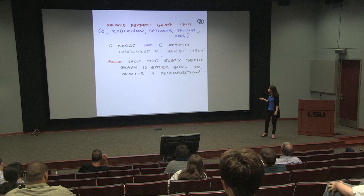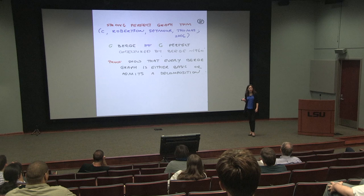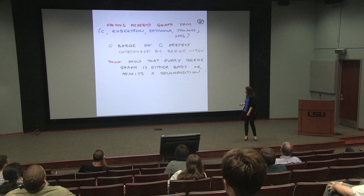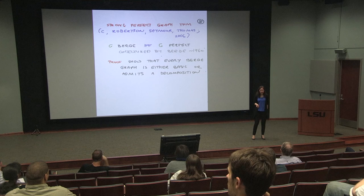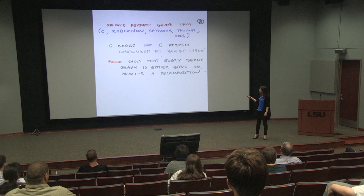A graph is Berge if and only if it's perfect. The proof goes via a decomposition theorem for Berge graphs: every Berge graph is either basic — something like a bipartite graph, a complement bipartite graph, or similar — or it admits a certain decomposition. I mentioned the decompositions yesterday; I'll mention them again today in more detail. This is just a recap with different emphasis of what I said yesterday, and now we continue.